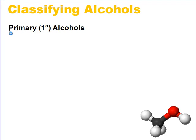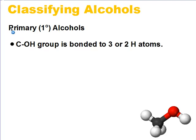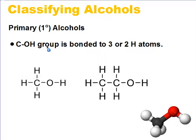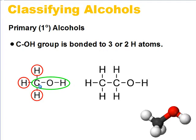If we consider primary alcohols, each primary alcohol has an OH bonded to a carbon group. If we look at these structures here and examine the C-OH bond in this structure, the carbon bonded to the OH group is surrounded by 3 hydrogen atoms.